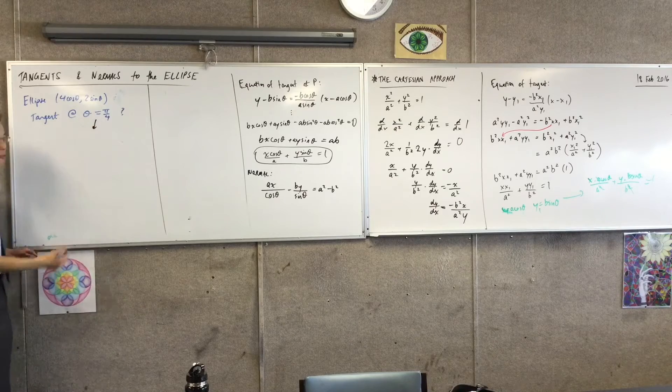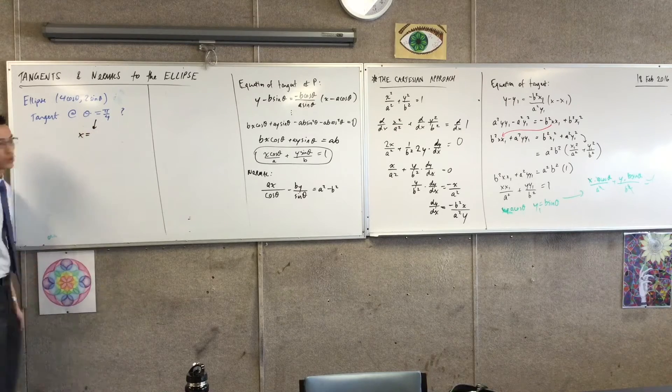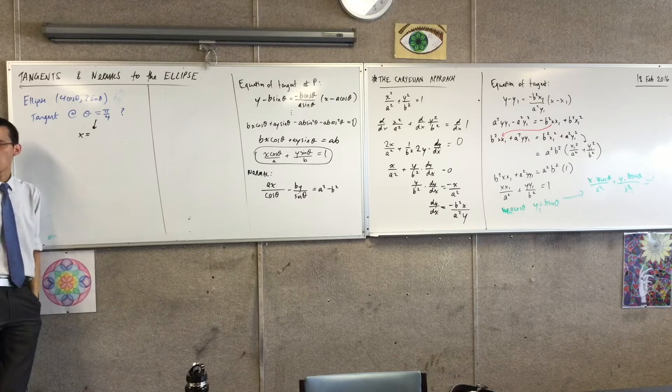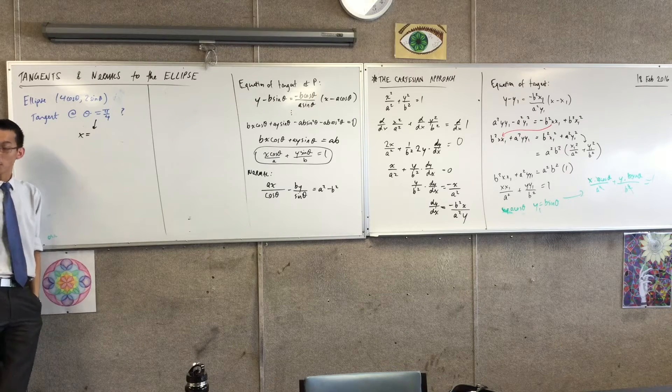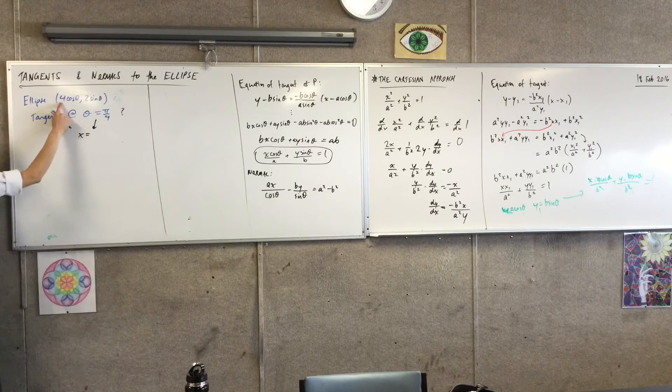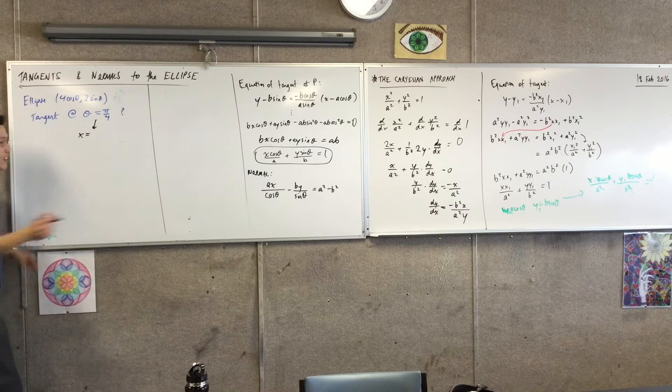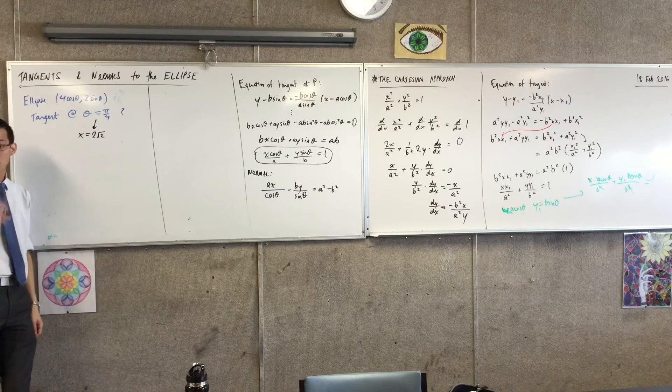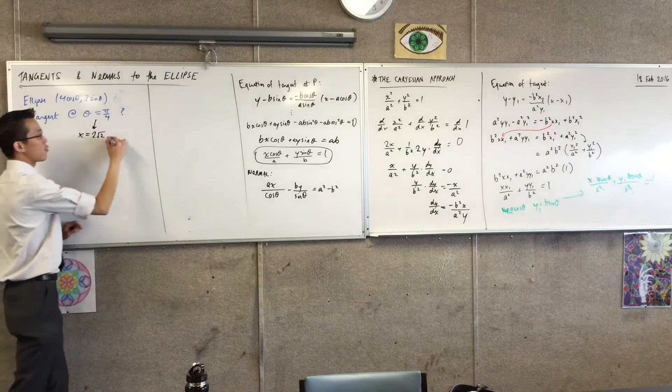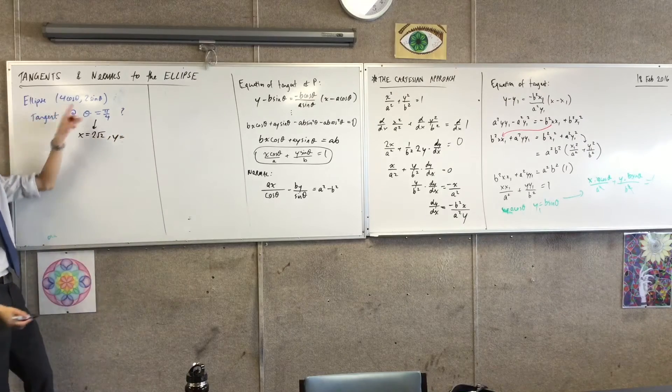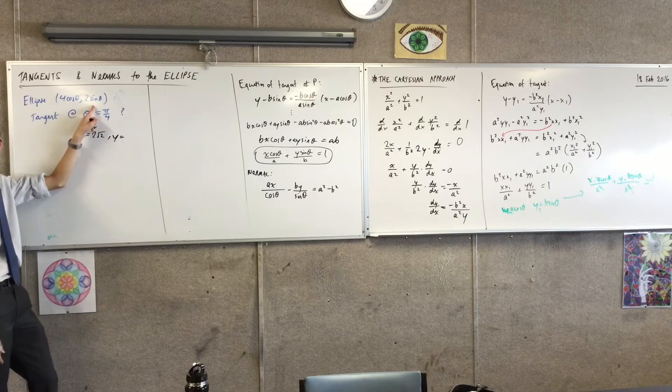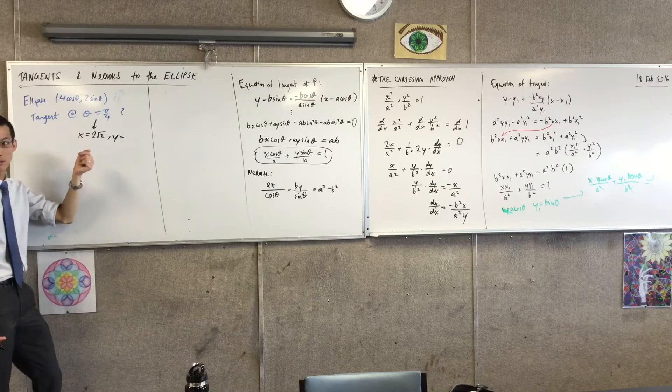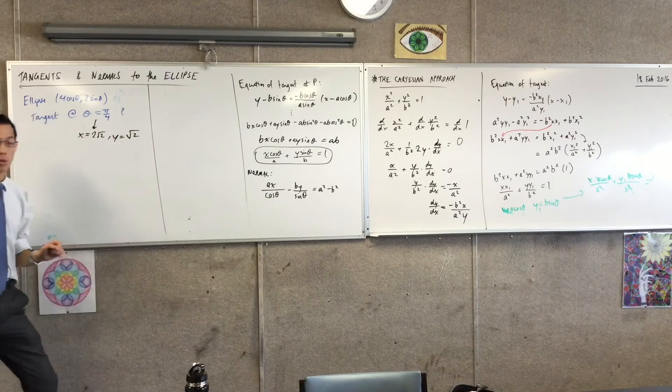When theta equals π/4, x is equal to, what's cos of π/4? Cos of π/4 is 1 over root 2, so I'm going to get 4 over root 2. You can simplify that in your head, that's 2 root 2. In the same way, y is 2 times 1 over root 2, which is root 2. I've got some coordinates.